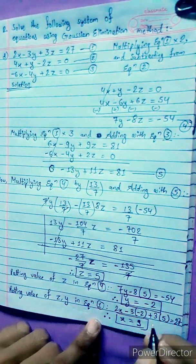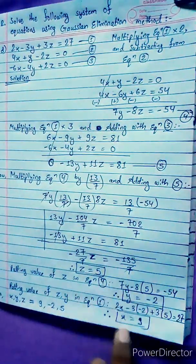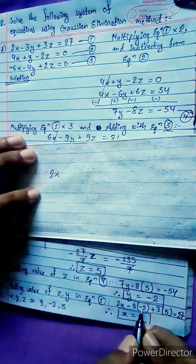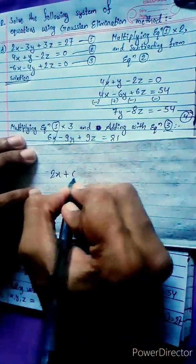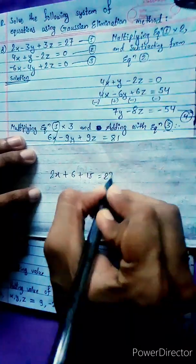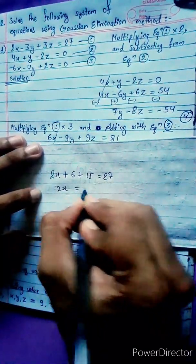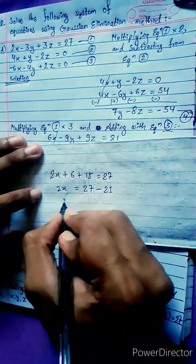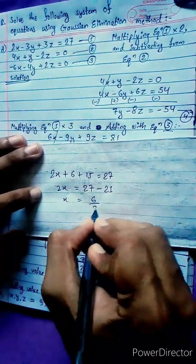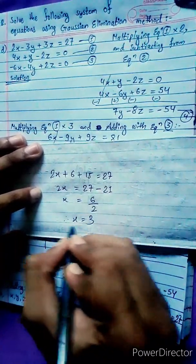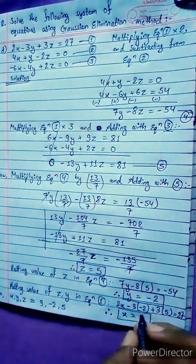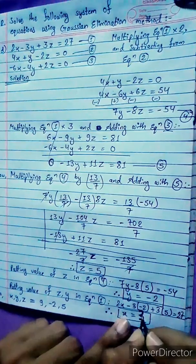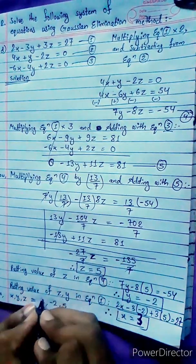We made a mistake. Let's correct it: 2x minus 6 plus 15 equals 27, so 2x equals 27 minus 21 equals 6, therefore x equals 3. We wrote 9 by mistake — the correct answer is x equals 3. Sorry for the mistake.